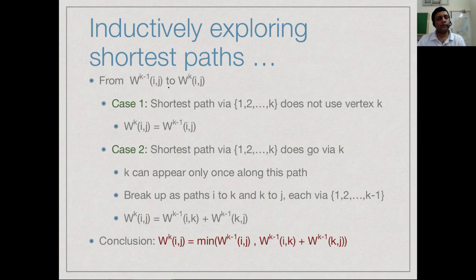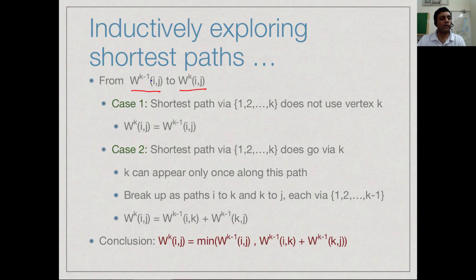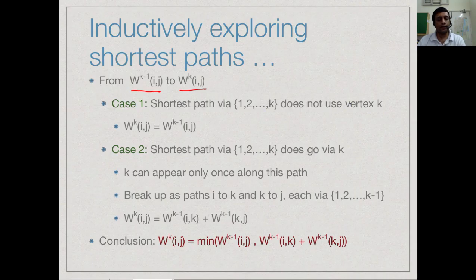Since this is an inductive definition, supposing we know the shortest paths using vertices 1 to k-1, we ask how to compute the shortest paths using 1 to k. There are two cases. The first case is that vertex k is not useful: the shortest path even allowing k does not use vertex k, so W^k(i,j) equals W^(k-1)(i,j).